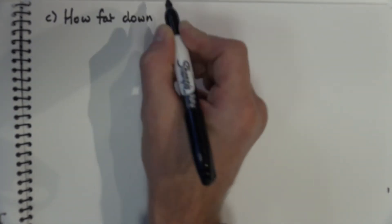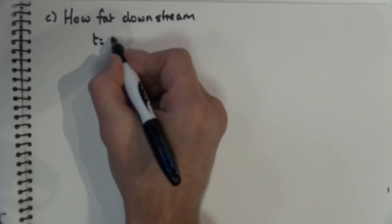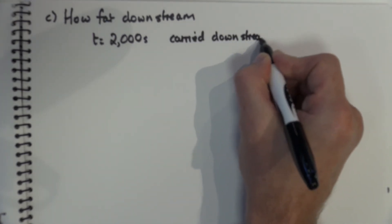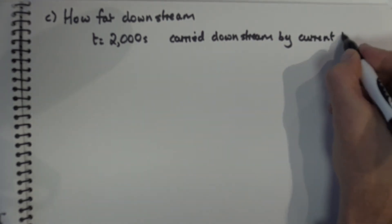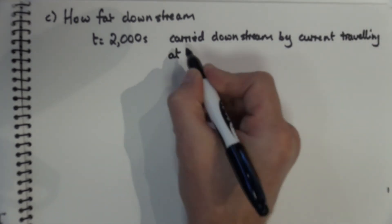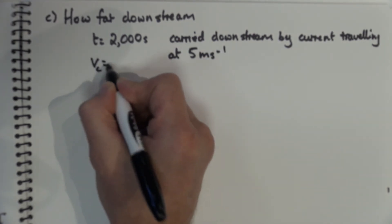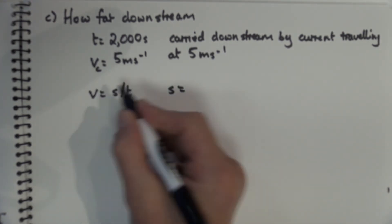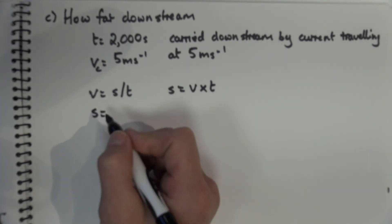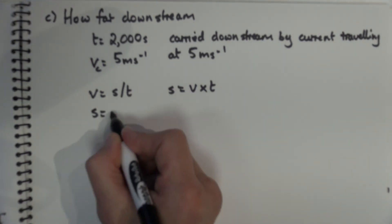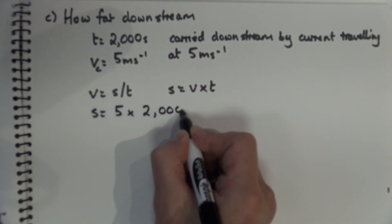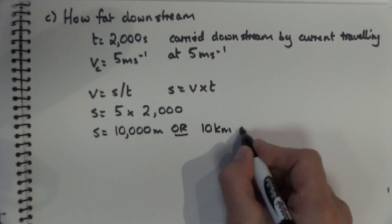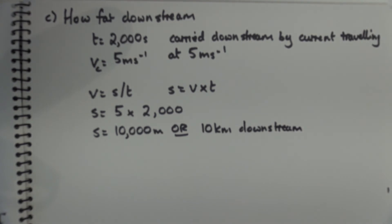Now I want to work out how far downstream the boat will travel following this path. The time is 2,000 seconds and it's carried downstream at a speed of 5 metres per second on the current. Using speed equals distance over time rearranged to distance equals velocity times time, that's 5 times 2,000, meaning the boat travels 10,000 metres, or 10 kilometres downstream. So it goes quite far downstream on this current.